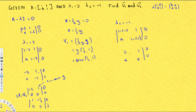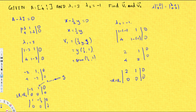Performing Gauss-Jordan elimination: multiply the first row by -2 and add to the second row (-2R1 + R2). The second row becomes 0, giving [2, 1; 0, 0]. Dividing the first row by 2 to get the pivot equal to 1 gives [1, 1/2; 0, 0]. The second column has no pivot, so y is the free variable.